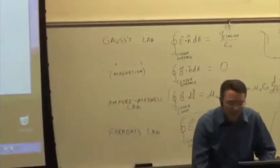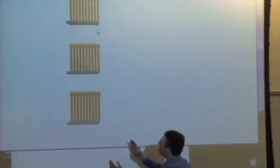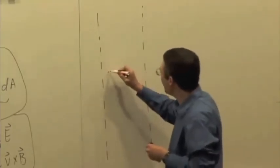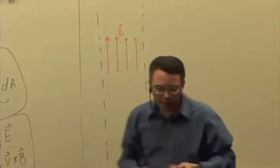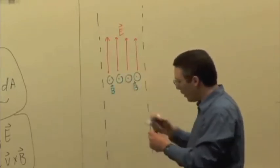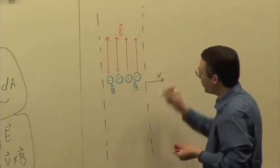We can think of this as a slab of space where there is a uniform electric and magnetic field. The slab runs into and out of the board, extends up and down, and is traveling to the right at some speed. The electric field is pointing upward in the positive Y direction, and the magnetic field is pointing out towards us in the positive Z direction.